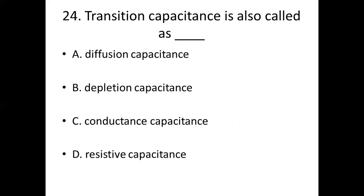24th bit. Transient capacitance is also called as dash. Option A: diffuse capacitance. Option B: dilatant capacitance. Option C: conductance capacitance. Option D: resistive capacitance.